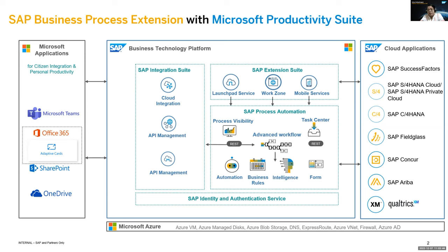We can look at it from a network perspective, from a security perspective, and data and analytics. In this scenario, we are focusing more on creating an event-driven based architecture where we will see how we can receive events from our SAP LOB systems and send them to the Microsoft Azure ecosystem. On the extreme left, you have the Microsoft Productivity Suite — Office 365, Outlook, MS Teams — which allows users to take actions and do certain business transactions from that user interface via the SAP BTP platform.